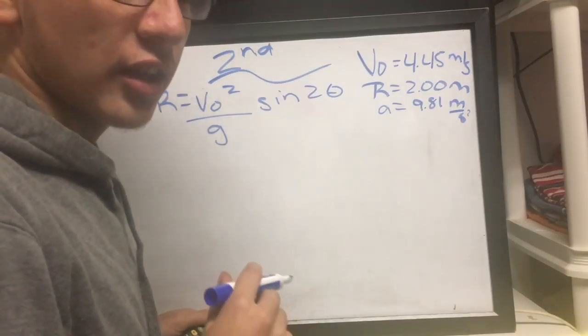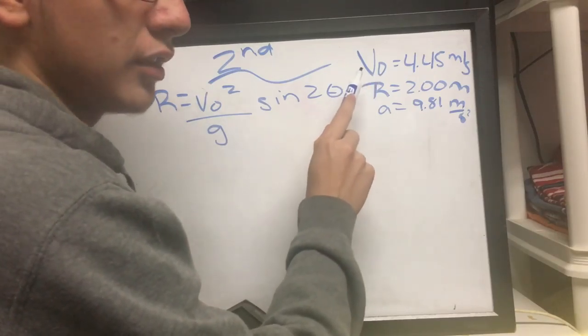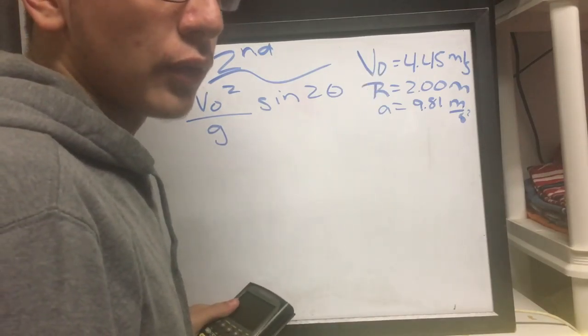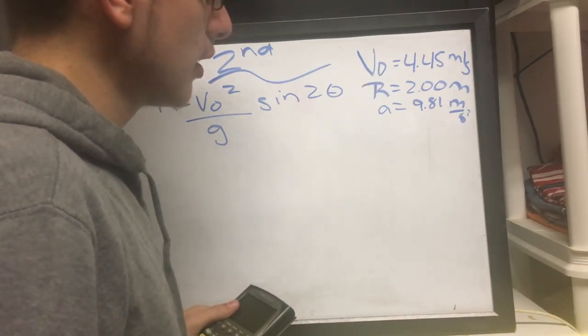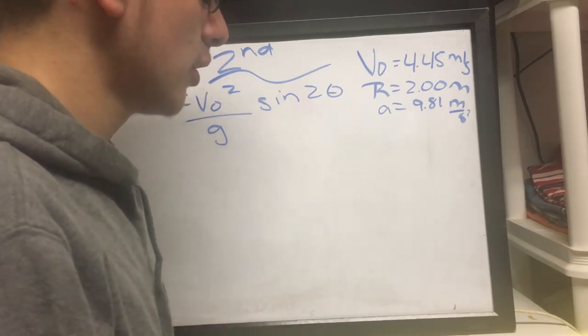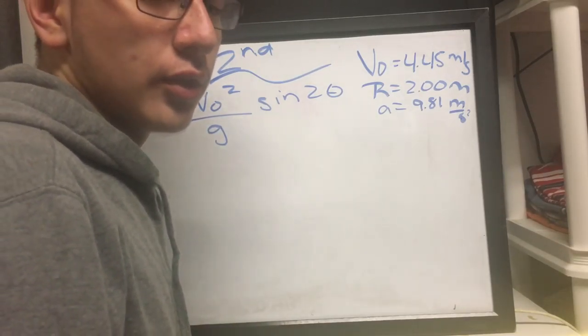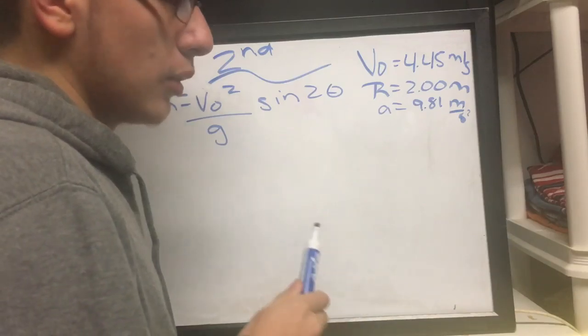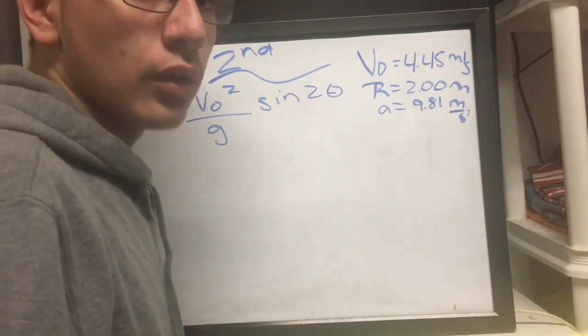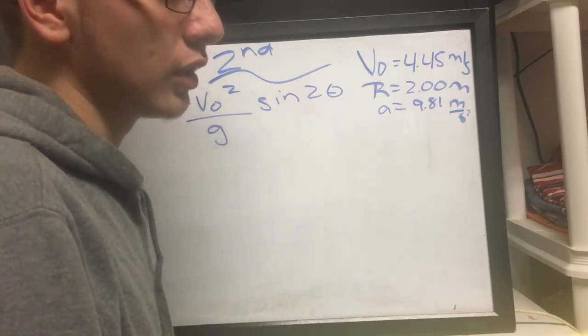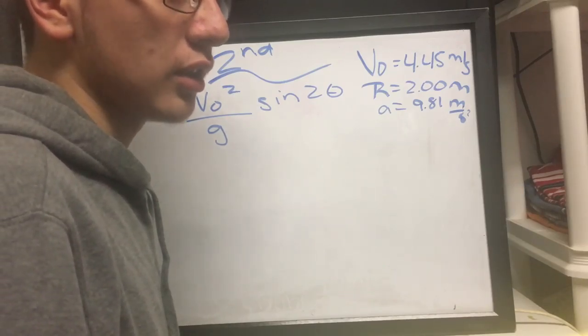Okay, so in this second attempt, we know that the initial velocity is 4.45 meters per second. The range would be 2 meters and acceleration is 9.81. So now we're trying to find the angle that we would need to launch it at so it can land at the bucket that is 2 meters away.